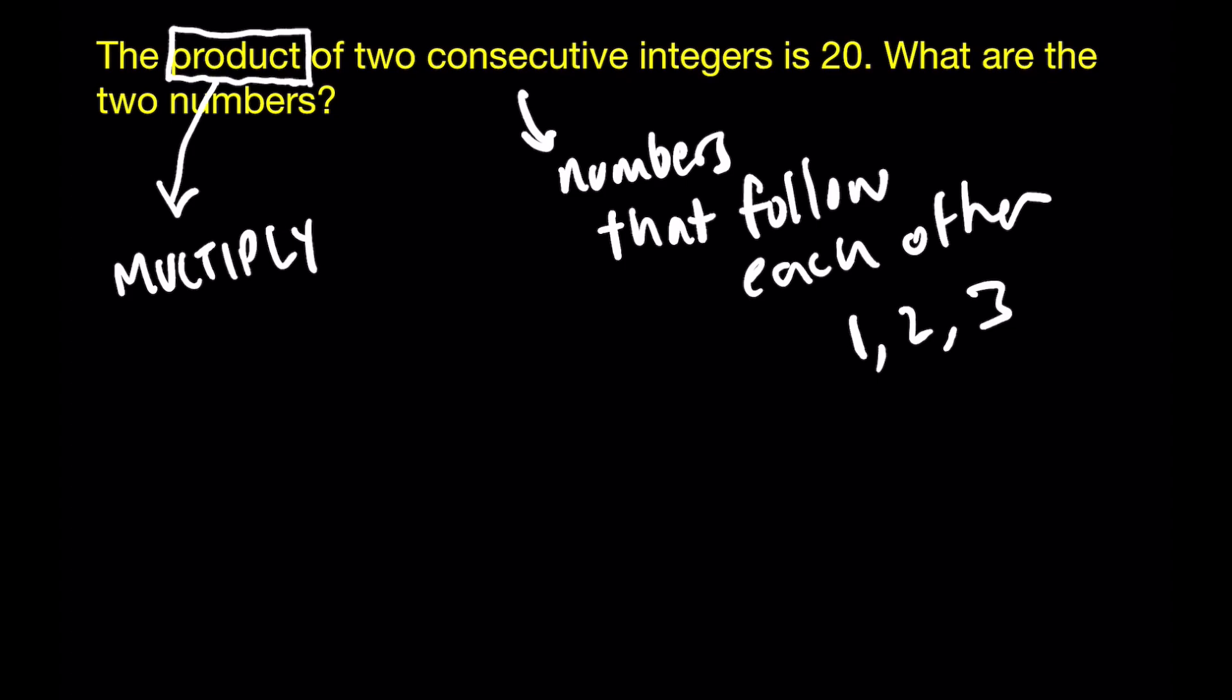So what they're asking is what two numbers that follow each other multiplied together are going to give you 20. That would be 4 and 5, right? They're consecutive integers, and if you multiply 4 times 5 it gives you 20. So the answer would be 4 and 5.